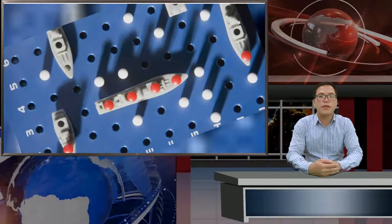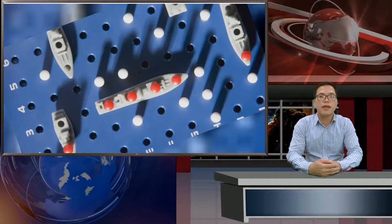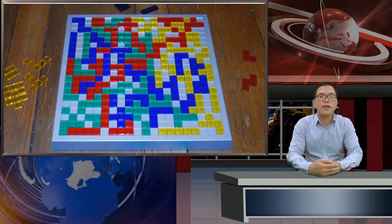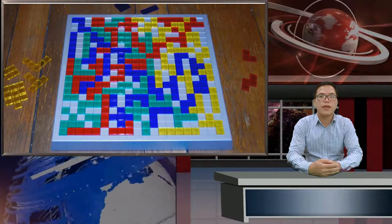Checkers has ancient roots. The earliest version of the game was discovered in Mesopotamia, or modern-day Iraq, during an archaeological dig. It was dated back to 3000 BC. The game started being played on a chessboard in 1100.